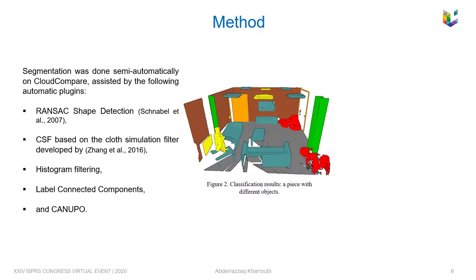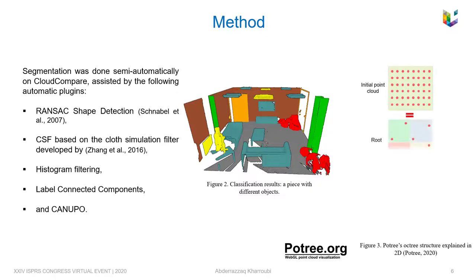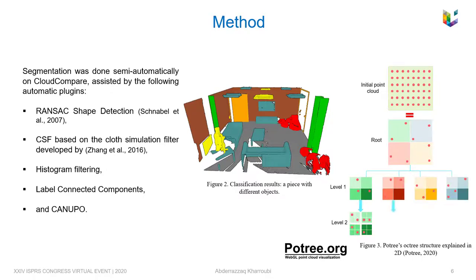The third step is structuration. The main purpose of a data structure is to permit easier and better access to underlying data. We orient ourselves by spatially indexing massive point clouds based on Potree's Octree data structure for real-time purposes.